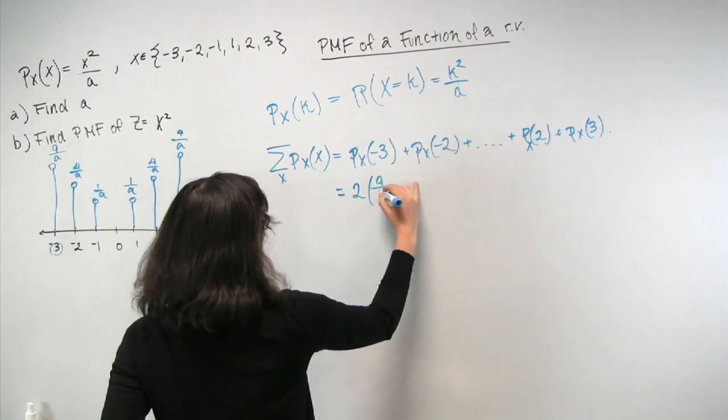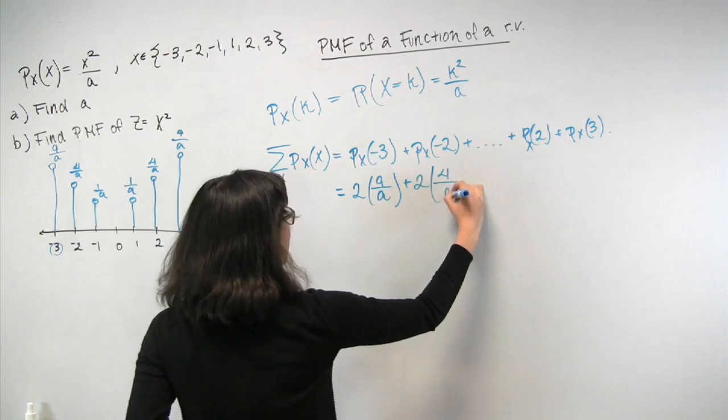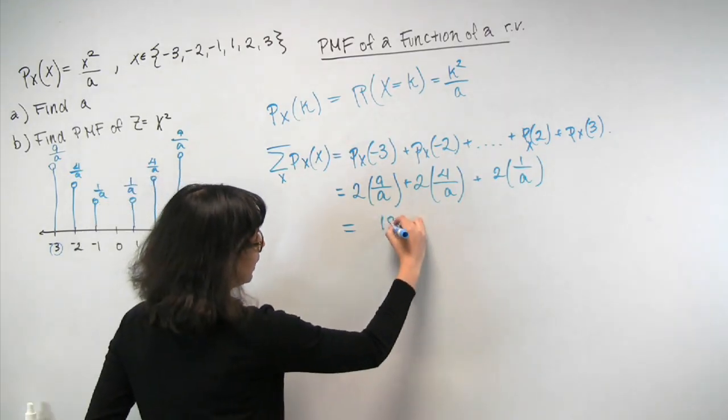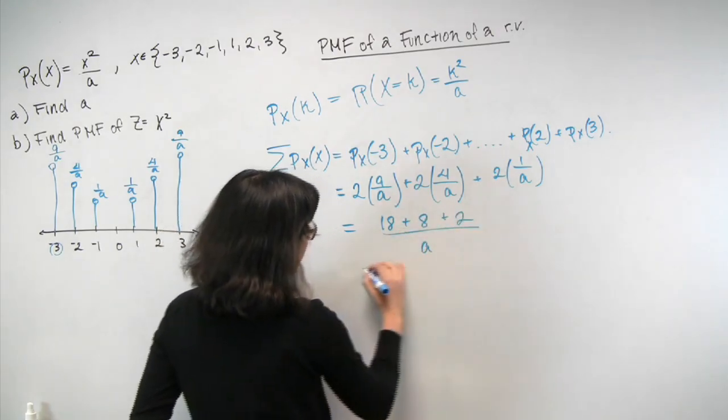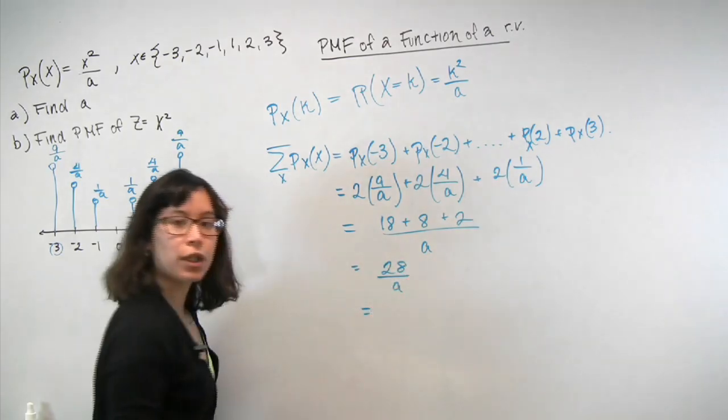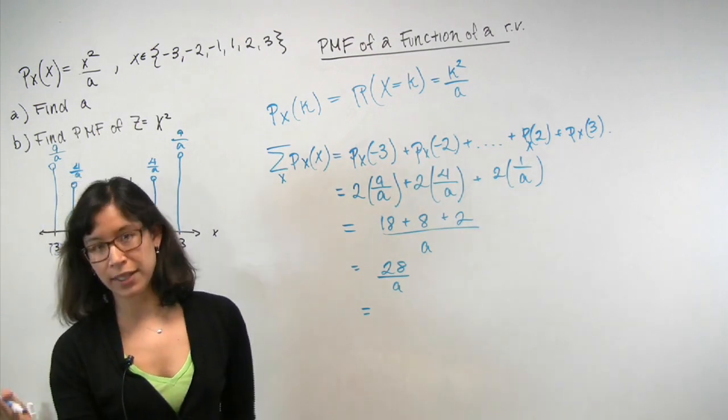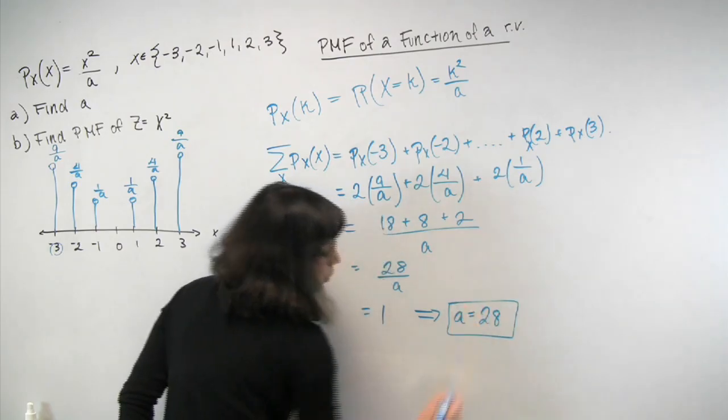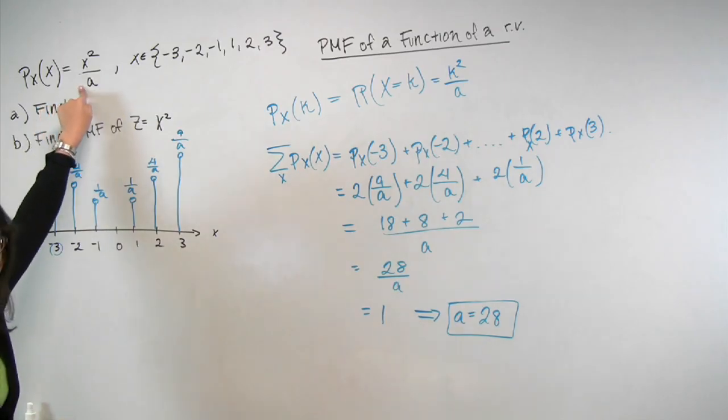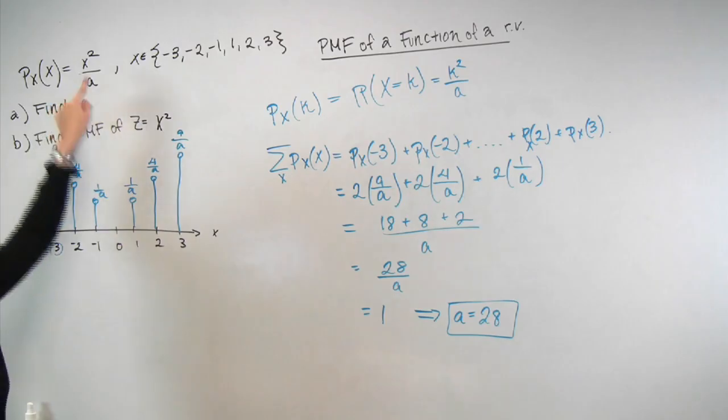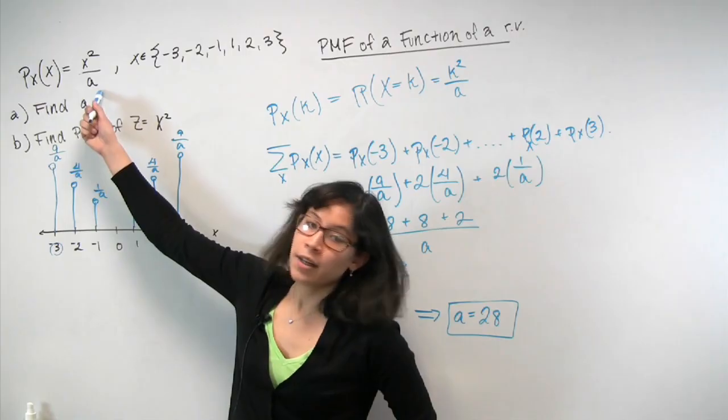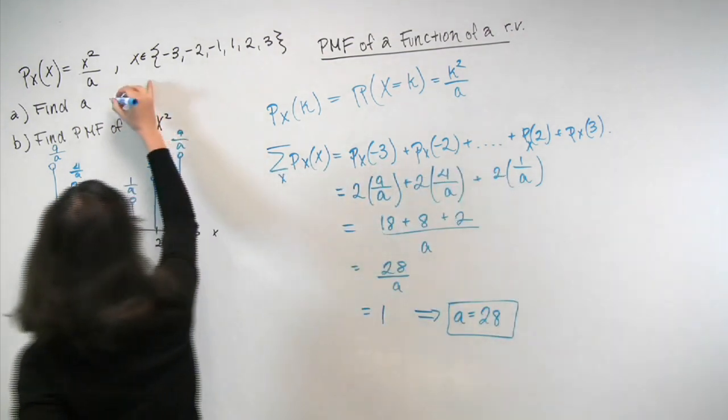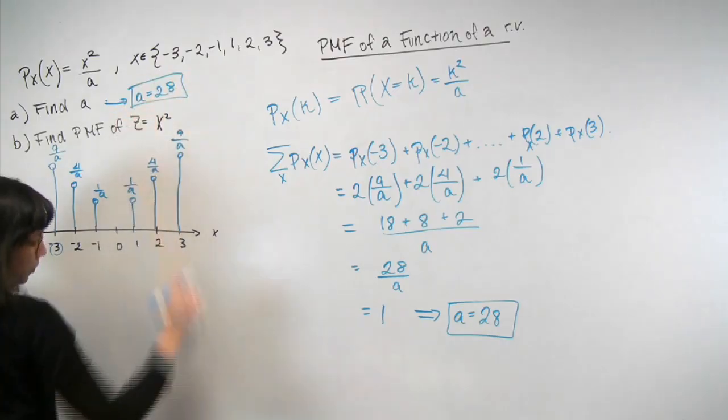So we know p x of minus 3 is equal to p x of 3. So we can go ahead and just take 2 times 9 over a. Similarly, we get 2 times 4 over a. And then plus 2 times 1 over a. So now, it's just a question of algebra. So simplifying this, you're going to get 18 plus 8 plus 2 divided by a. And this gives you 28 over a. And as I argued before, you know that if you sum a PMF over all possible values, you must get 1. So this is equal to 1, which of course implies that a is equal to 28. So what we've shown here is that you actually don't have a choice for what value a can take on. It must take on 28. And in fact, if you plug in any other value than 28 in here, you actually are not going to have a valid PMF because it's not going to sum to 1. So I'm going to write my answer here and then erase to give myself more room for part b.